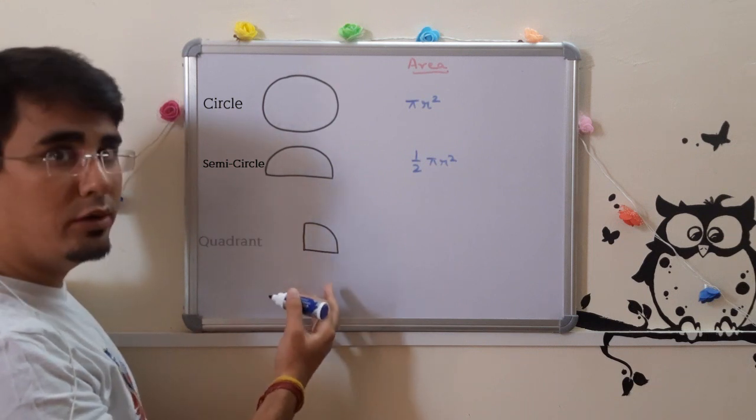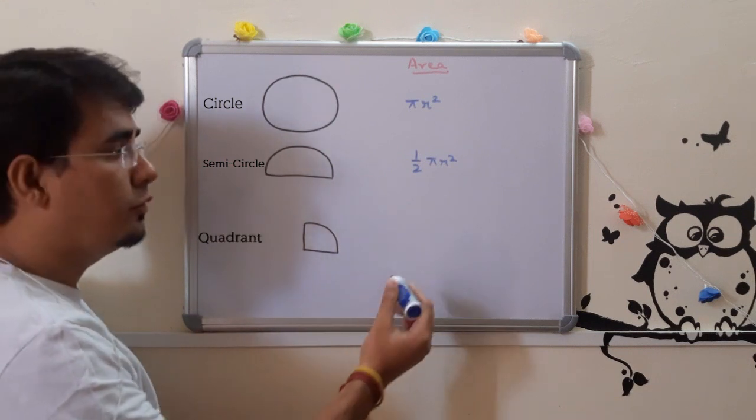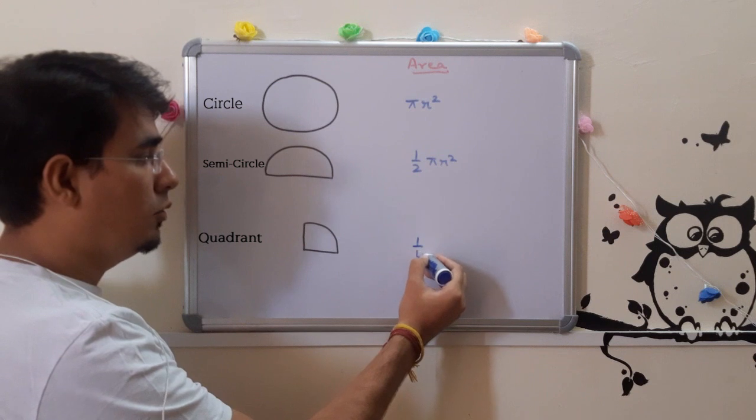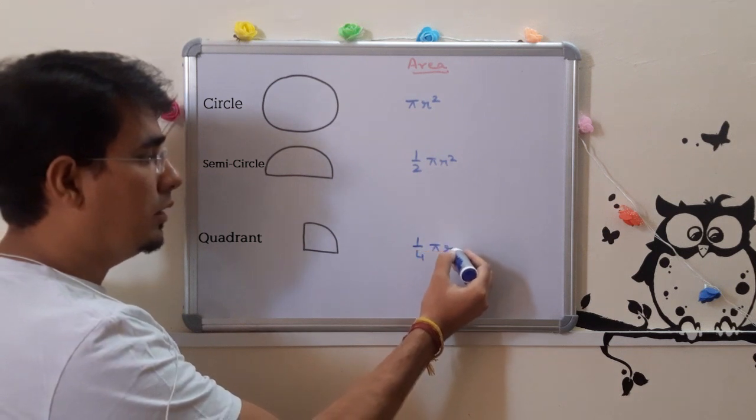What is this shape? It is a quarter of a circle. Quarter means one-fourth. So it is ¼ π r².